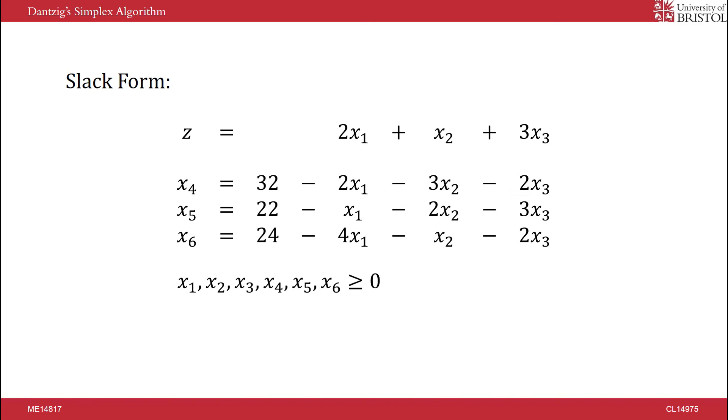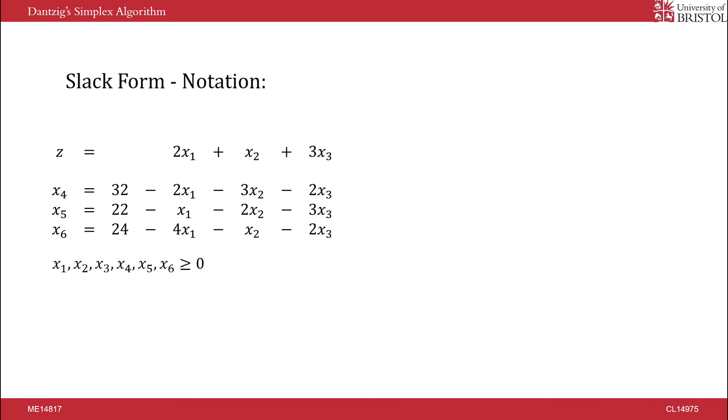Throughout the algorithm, we maintain two sets, which are the basic and non-basic variables. The slack form can be represented in the following way. We have an n by n matrix A to store the coefficients in our n constraints. A tuple lowercase b to hold the values of the basic variables. A tuple c to hold the coefficients in the objective function. A tuple n to hold the non-basic variables. A tuple capital B to hold the set of basic variables. And a value v to hold the value of the objective function.